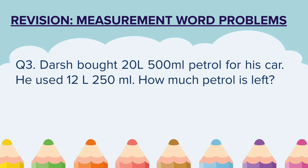Question 3. Darsh bought 20 liters 500 milliliters of petrol for his car. He used 12 liters 250 milliliters. How much petrol is left? In this question Darsh has bought 20 liters 500 milliliters of petrol and out of that he has used 12 liters 250 milliliters. We have to find out how much petrol is still left with Darsh.